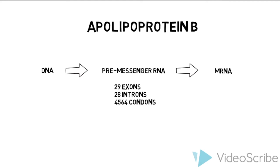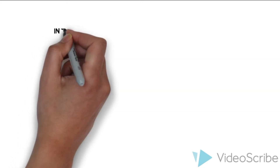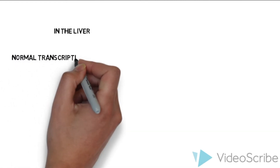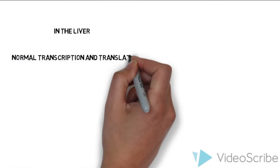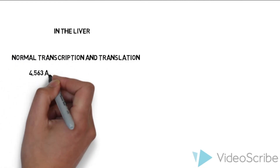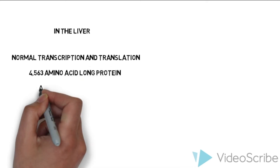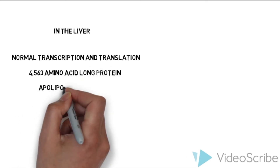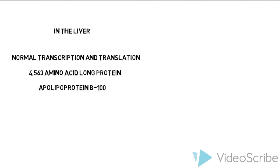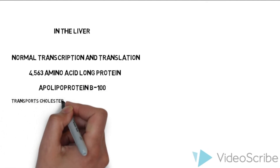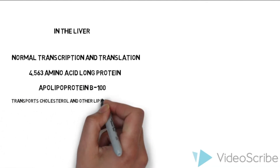This general process of expressing the APOB gene is active in both the liver and the intestine. However, there's one small difference. In the liver, the APOB gene is transcribed and translated normally, as we just described. It produces a 4,563 amino acid long protein called ApoLipoprotein B100, and it works to transport cholesterol and other lipids in the blood.